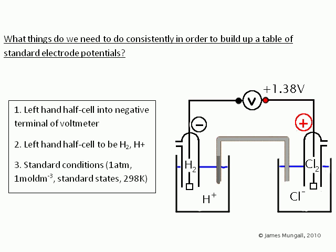And now we're ready to answer this last question. What things do we need to do consistently in order to build up a table of standard electrode potentials? So number one, left hand half cell into negative terminal of the voltmeter. And number two, the left hand half cell is to be the hydrogen half cell. And then thirdly, we need standard conditions. So for gases, one atmosphere. For concentrations, one mole per decimetre cubed. Elements in their standard states and 298 degrees Kelvin.